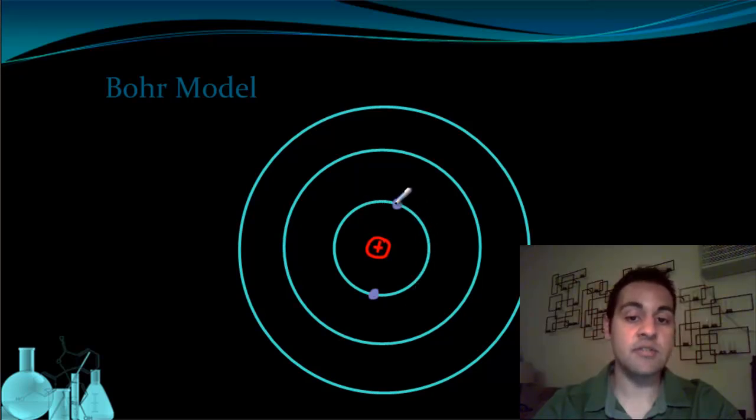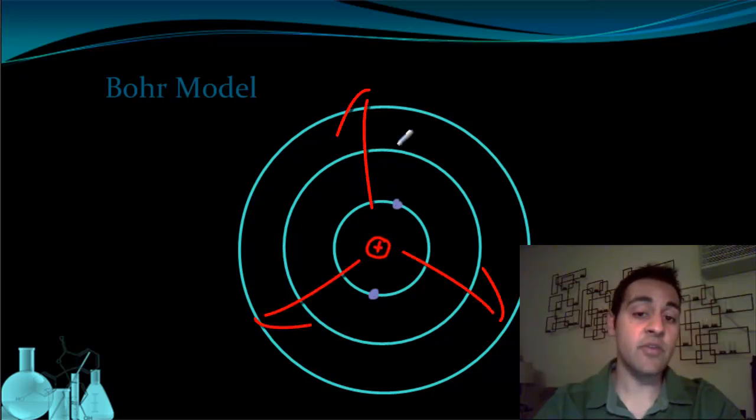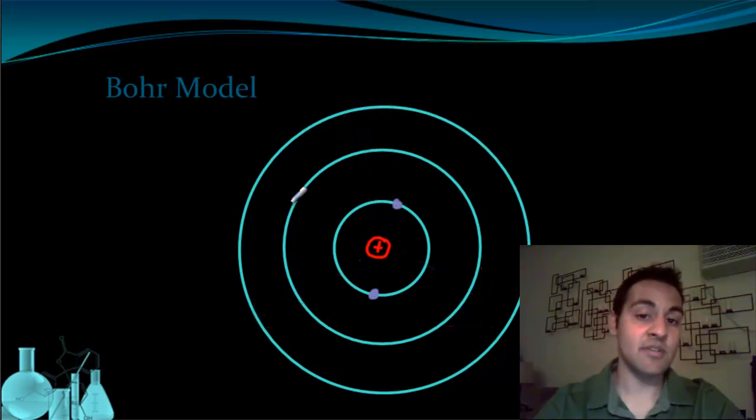Now the orbit closest to the nucleus is the lowest energy. The further away you get from the nucleus, so like this orbit or the third orbit, the further away you get from the nucleus, the more energy is contained in those orbits. So an electron on this orbit would have more energy than an electron on the first orbit. Now it's important to mention here that electrons cannot exist floating around between two orbits. So how does this explain the colors given off by hydrogen?